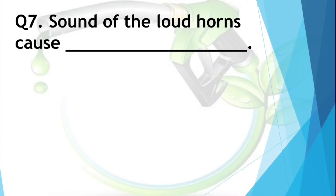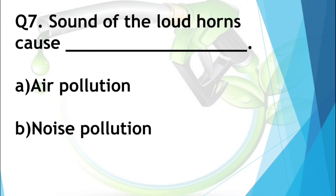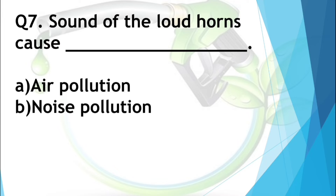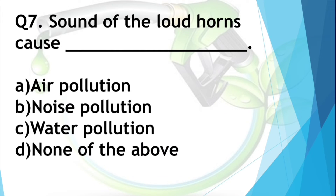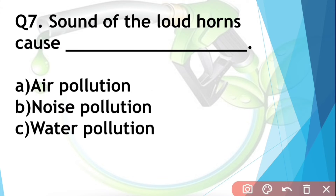Question number seven: Sound of loud horns causes — options are air pollution, noise pollution, water pollution, or none of the above. You know that another name for sound is noise, so sound from loud horns makes noise pollution. The answer is B — noise pollution.